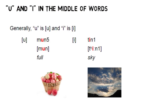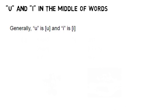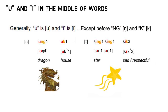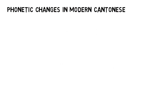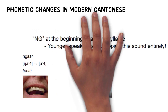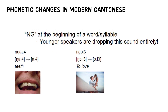We then discussed what happens when you see the letters U and I in the middle of words. Generally, you'll pronounce these letters as 乌 and 依 as in 門 and 天. The only times you're going to do something different is when those letters show up before an NG or before a K. In those cases, you'll switch over to 呃 as in 龍 and 呃 as in 星. Finally, we discussed two of the more important changes happening now in Cantonese pronunciation. The first has to do with the letter N — the younger generation of Hong Kong is tending to pronounce it as a letter L, so words like 老 and 奶 are often pronounced as 老 and 來. The other change has to do with words starting with NG, where younger speakers are starting to drop that consonant altogether, pronouncing those words without the initial NG.